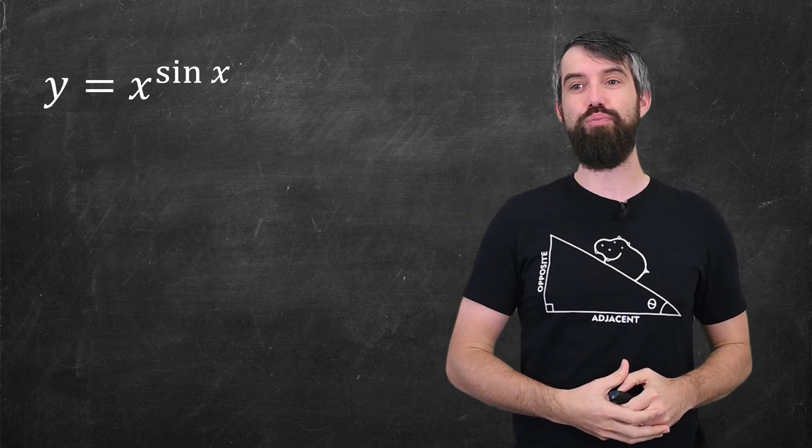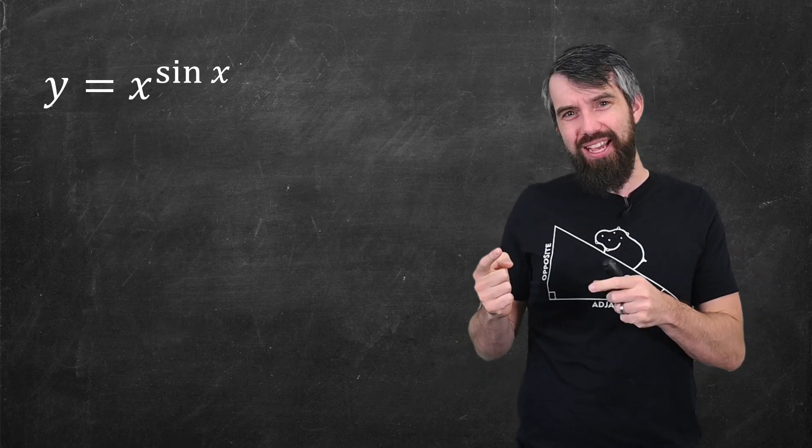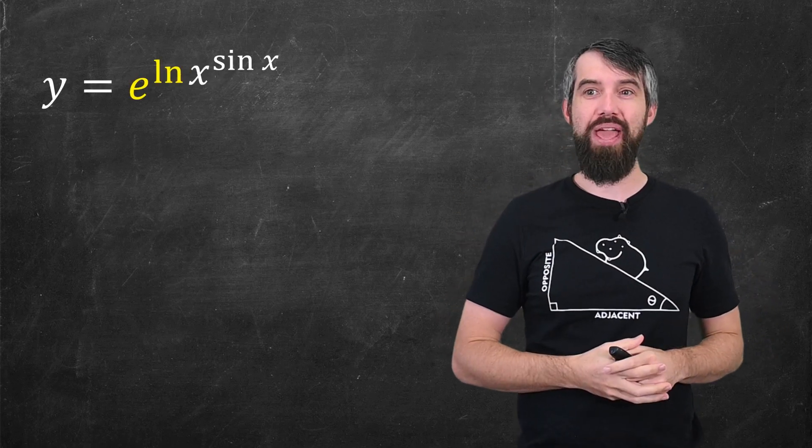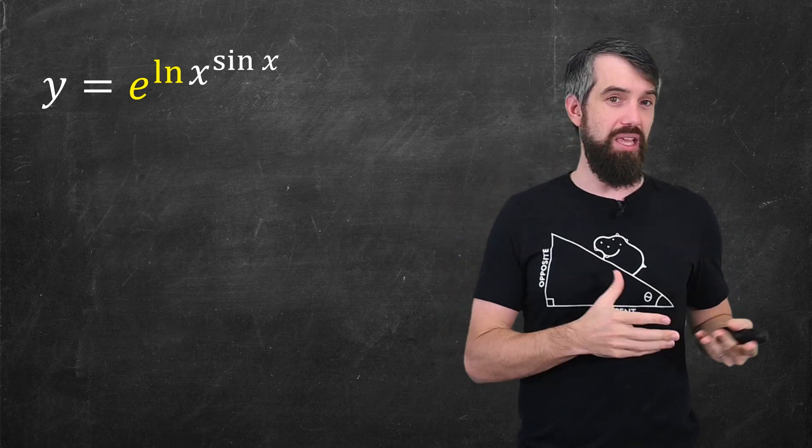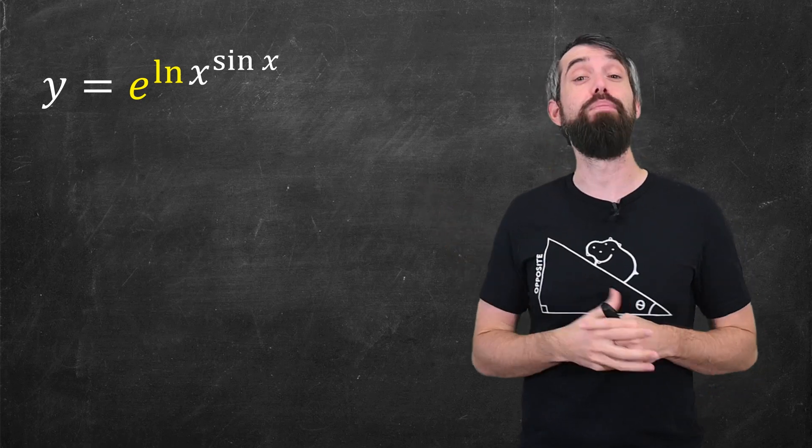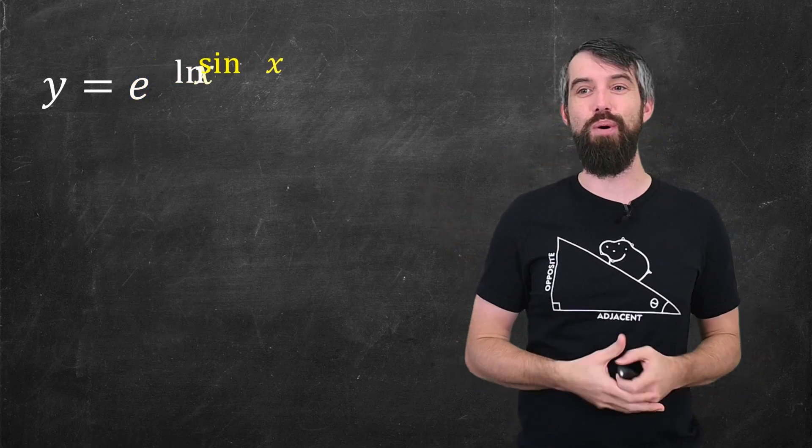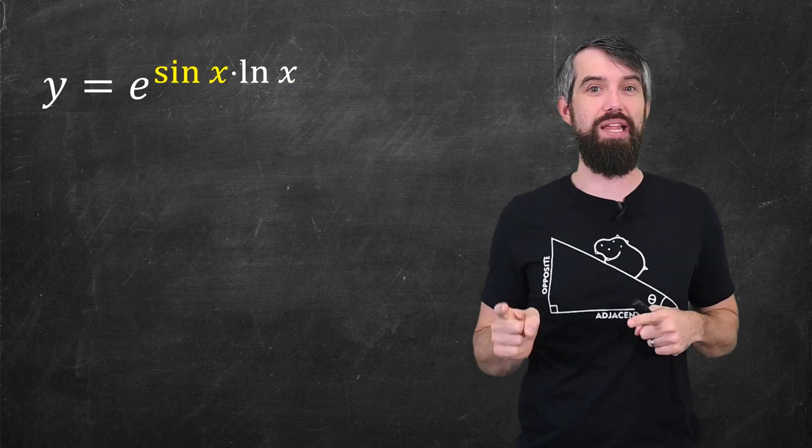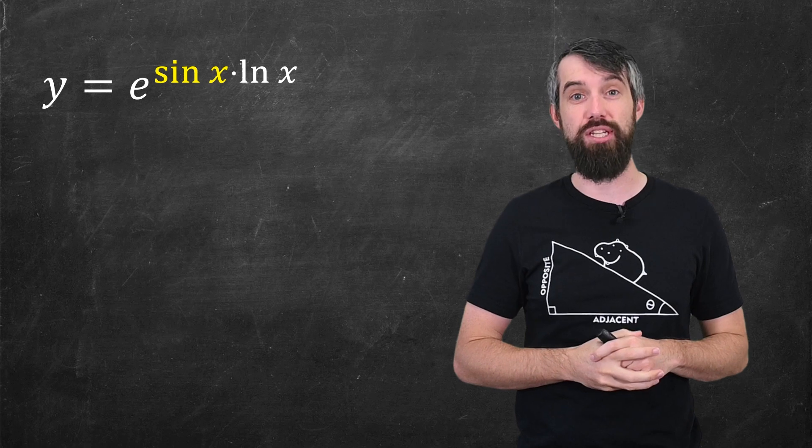There's actually another way to do it too that I want to very briefly mention. If I have y is x to the sine of x, I can get a logarithm in another way, which is e to the logarithm of the function. E and logarithm are inverses of each other, so I can just input this, it doesn't change anything. And then I do the same tricks. I've got a sine x in the exponent, I can bring it out the front, and a combination of chain rule and product rule gives me the exact result that I had just seen before.